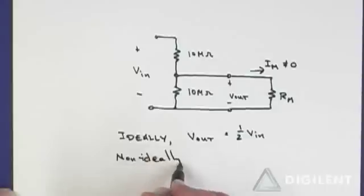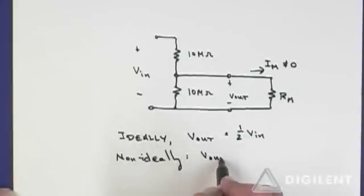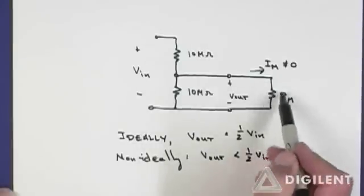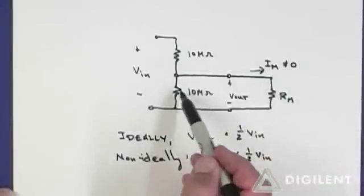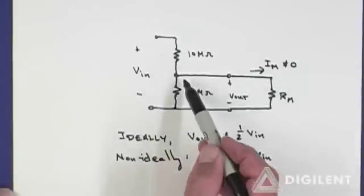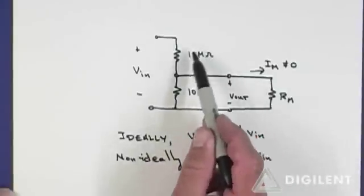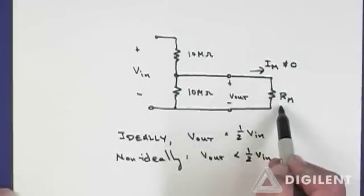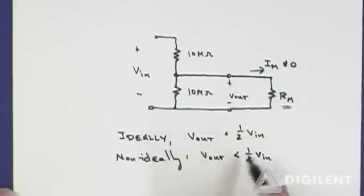So non-ideally, Vout is going to be less than 1 half of VN since this parallel combination of R sub m and this 10 megaohm resistor will be a lower resistance than this 10 megaohm resistor up here. Depending on what Rm is, this may be significantly less than 1 half of VN. Let's take a look at our meter and see how it behaves under these circumstances.